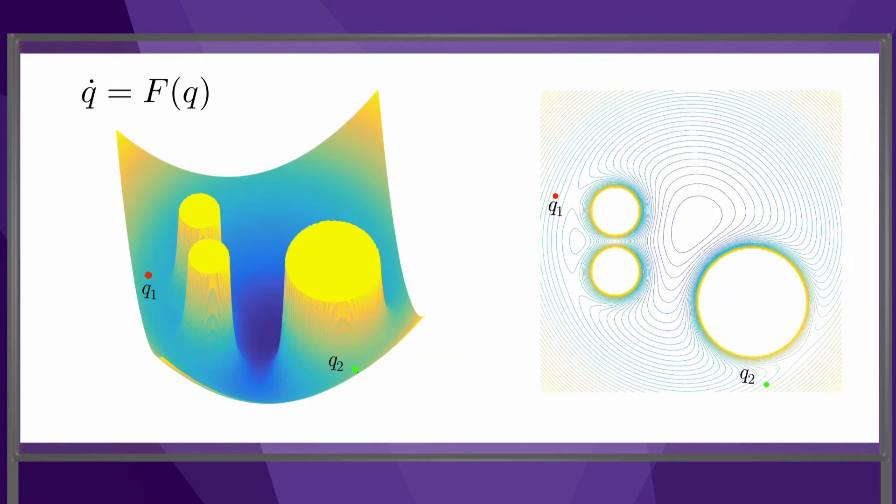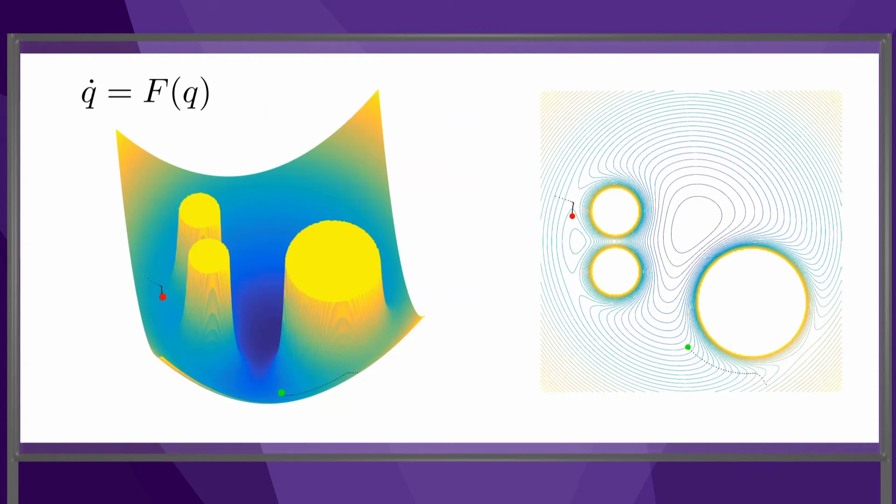If we simulate the robot's motion from two different initial configurations, Q1 and Q2, we see that one motion gets stuck at the local minimum, while the other finds its way to the global minimum.